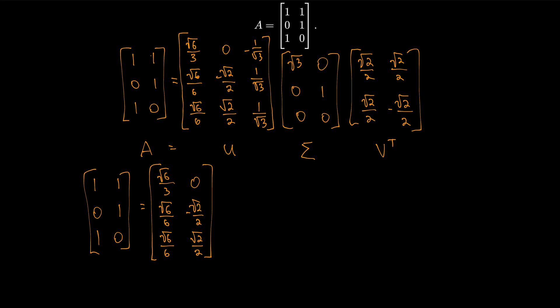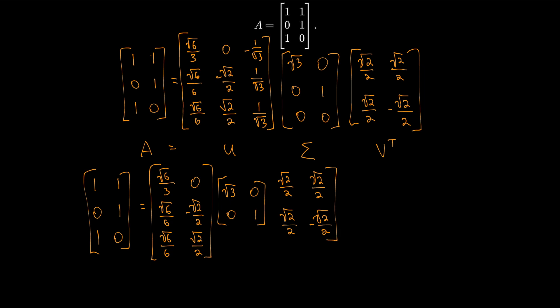Then we drop the last row of the next matrix to get Σ₁ equals √3, 0, 0, 1 — a 2 by 2 matrix. And we keep V, so Vᵀ is √2/2, √2/2, √2/2, −√2/2. So there's our reduced singular value decomposition.